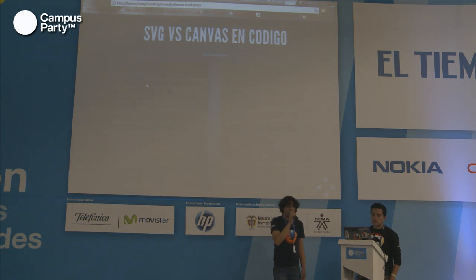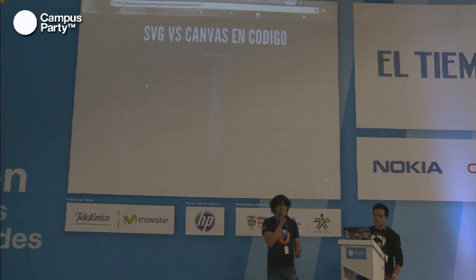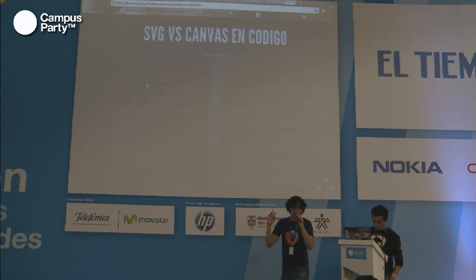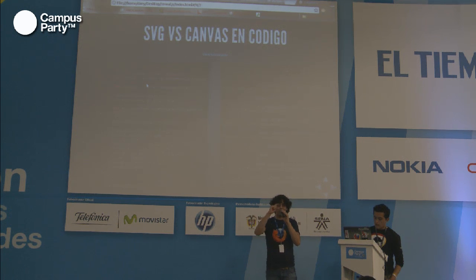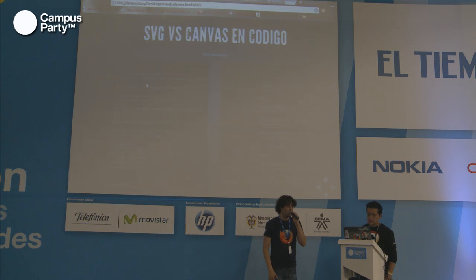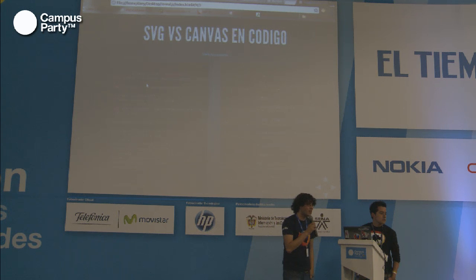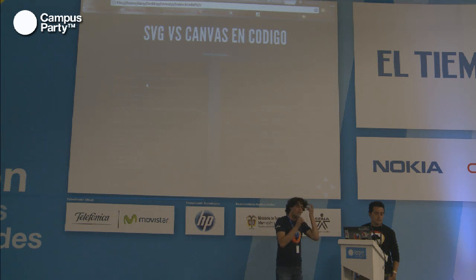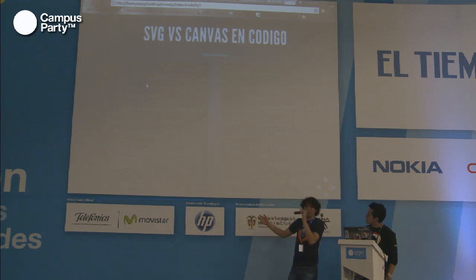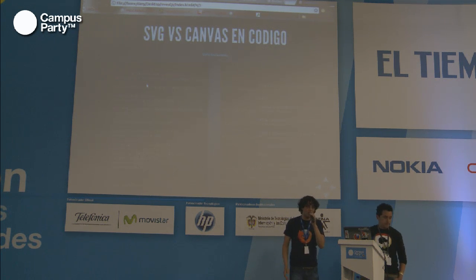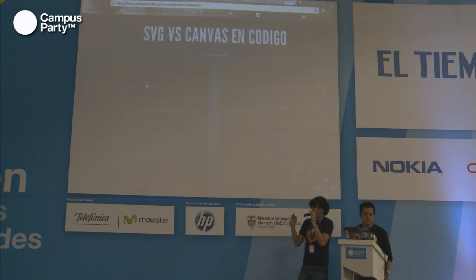Esta presentación ya la vamos a subir a una URL que les daremos al final para que la ojeen. Pueden mirar el código en sí para ver las diferencias de cómo cada uno dibuja un rectángulo. Básicamente, mostraba el marcado de SVG de un lado, y del otro cómo se manejaba dibujar un rectángulo a través de Canvas y JavaScript.